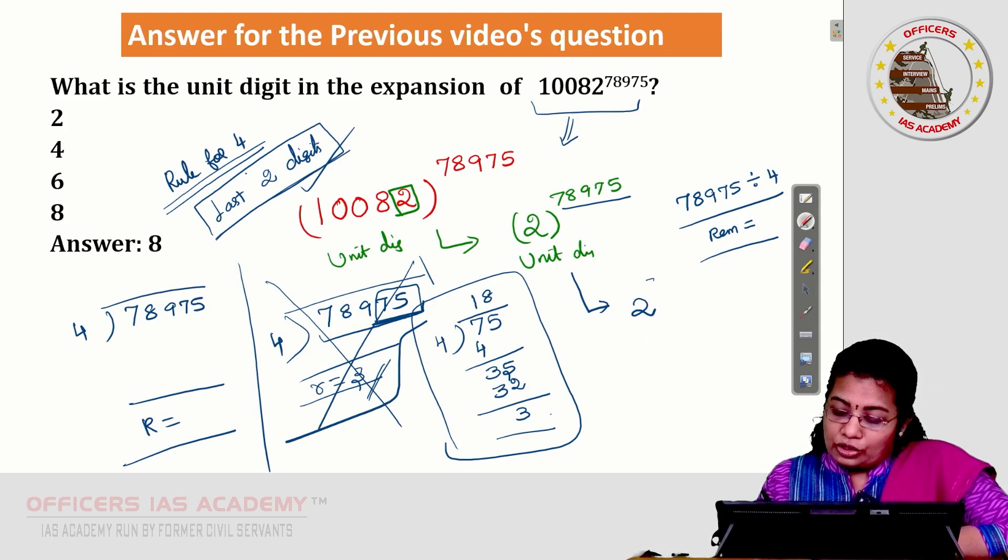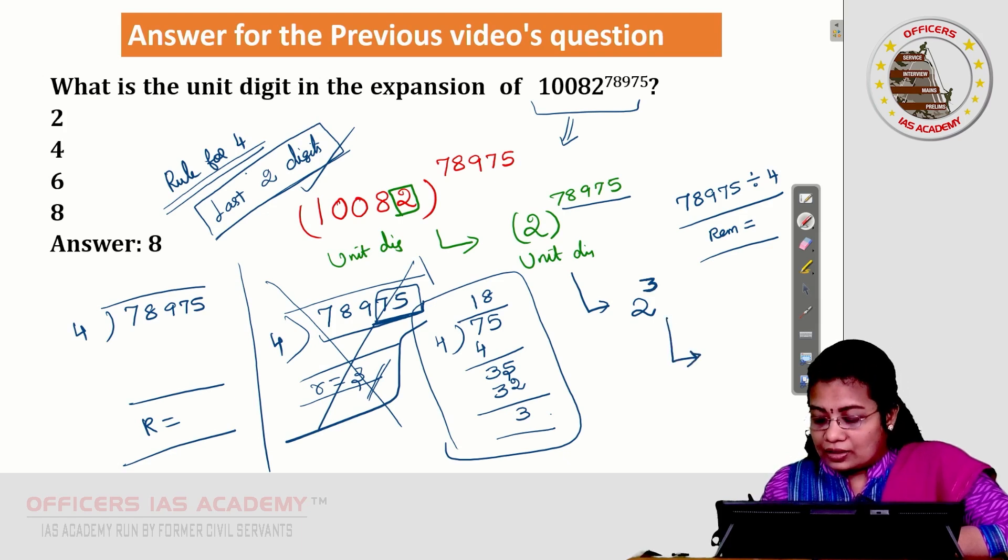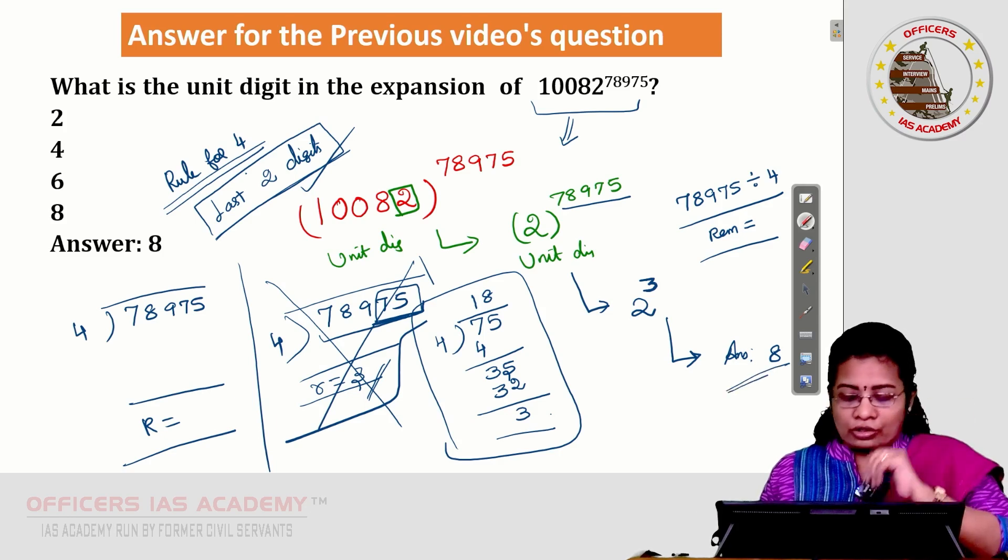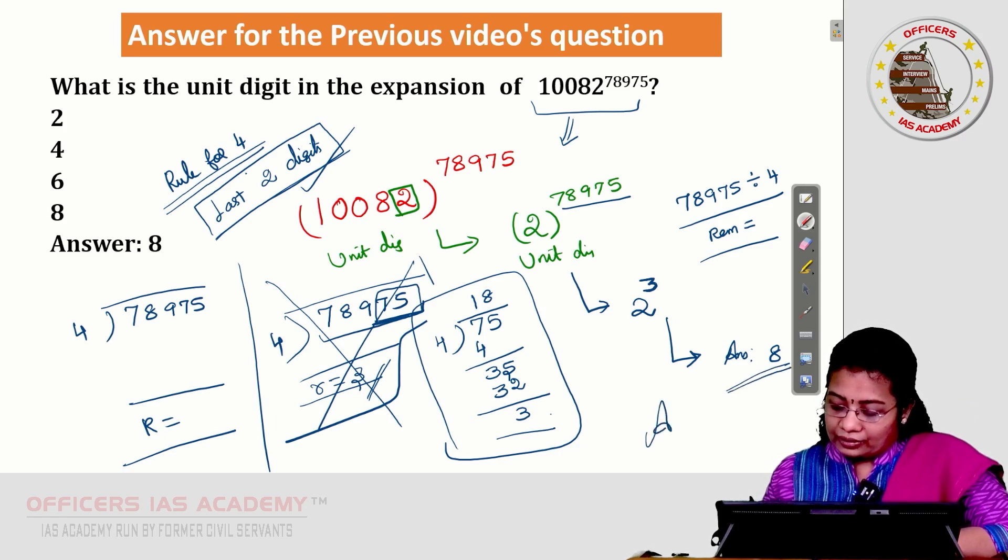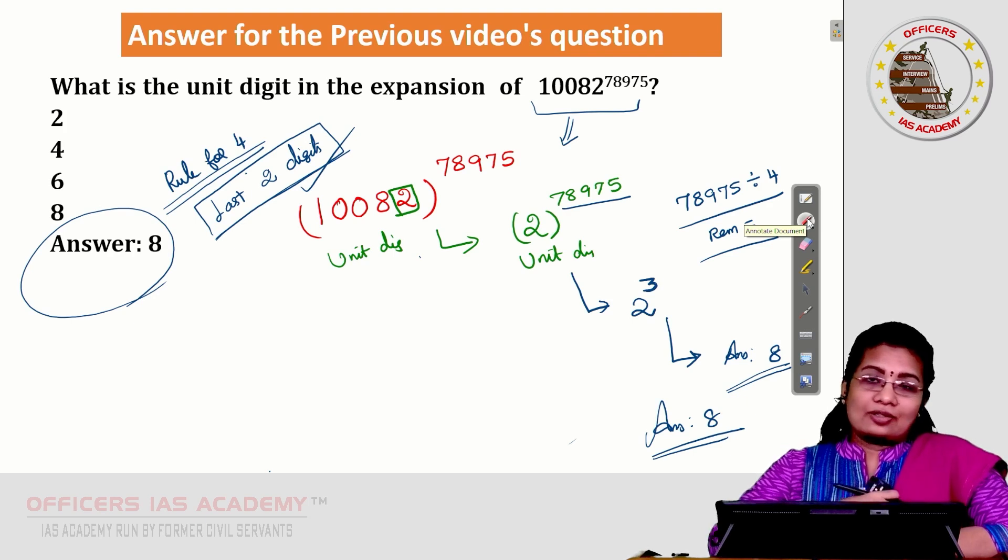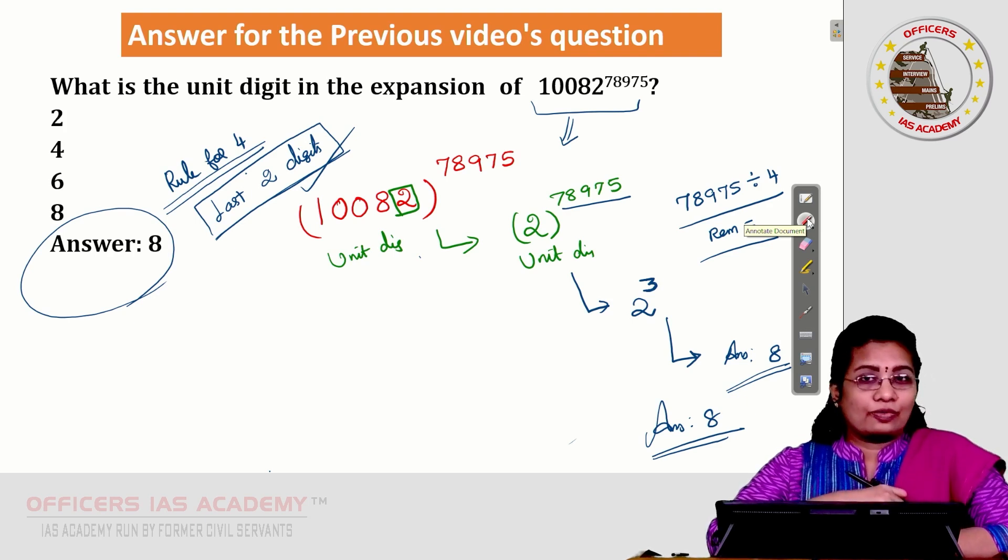Just I will substitute 2 power 3. What is 2 power 3? Answer 8. What is the unit digit of 8? 8 being a single-digit number, unit digit also 8. Finally, the result is 8. In the next video, I will meet you with some other interesting question. Thanks for watching.